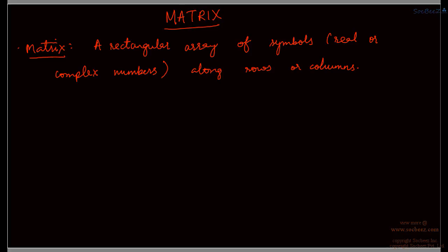Matrices are usually denoted by uppercase letters like capital A or capital B. Usually A is the most commonly used symbol for any general matrix. And these are the elements. I will explain how I write these indices in a bit.